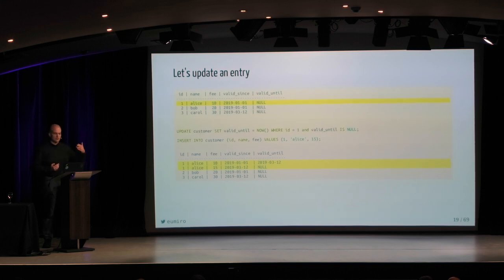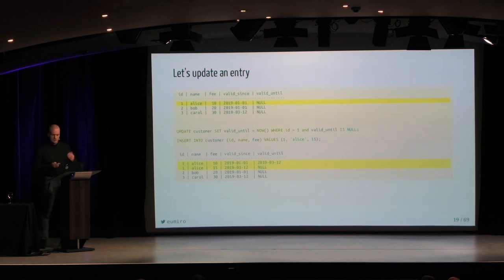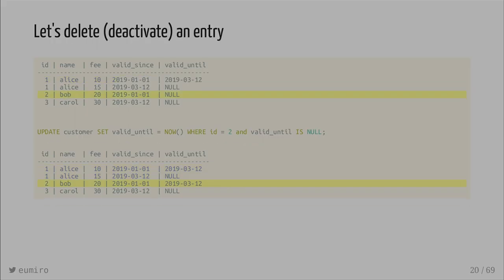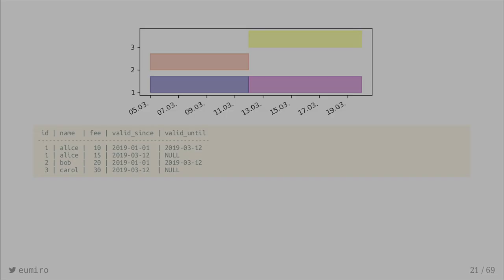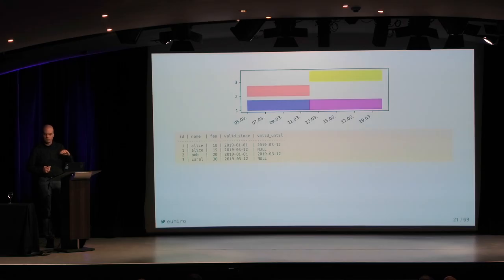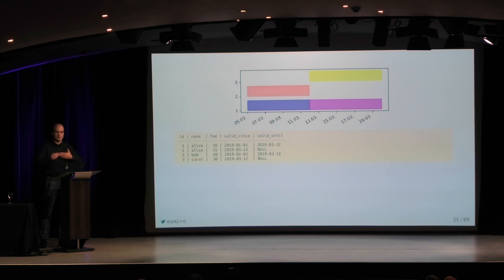So now if we select data from the database from February, we get two records. If we ask what is valid tomorrow, we get three records, and this works quite well. If we want to delete an entry, we deactivate it — we just update the 'valid until' of this entry to the current daytime, and then it is done. We know that Bob as a customer was valid until now, and if we ask whether Bob is valid tomorrow, no, he is not valid anymore. If we want to visualize it, you see three rows and all the times, and you see that these four colored bars don't overlap.